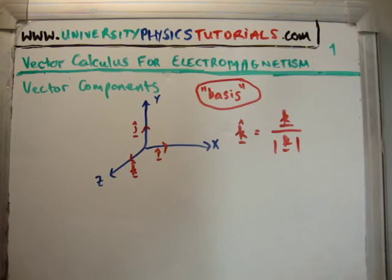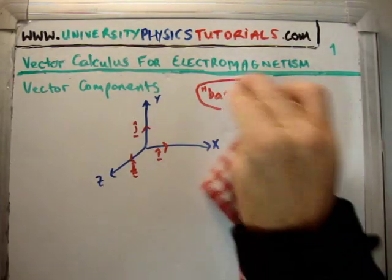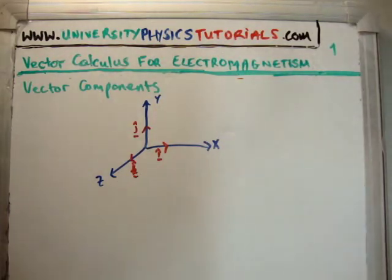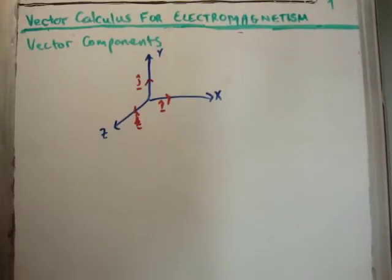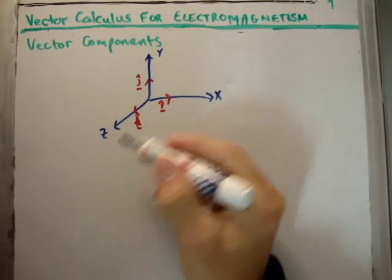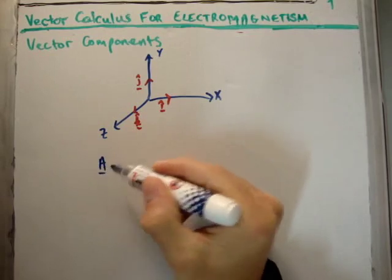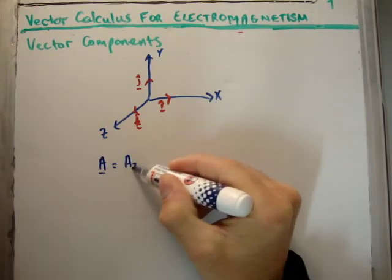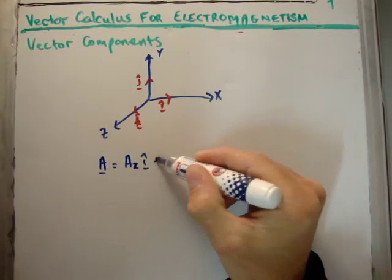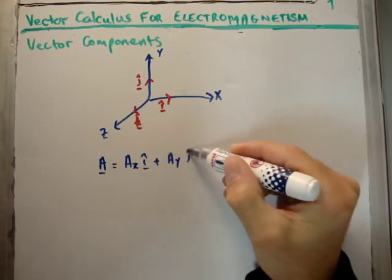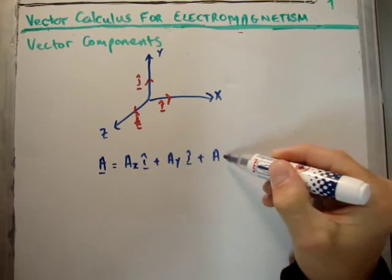If you want to make any arbitrary vector in this particular space using these three vectors as our basis, let's say A, we have the x component A sub x in the i-hat direction, A sub y in the j-hat direction, and A sub z in the k-hat direction.